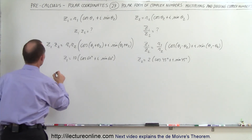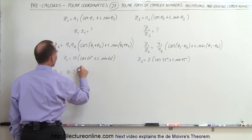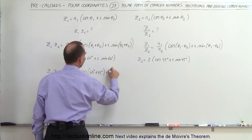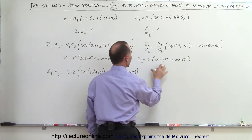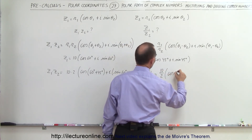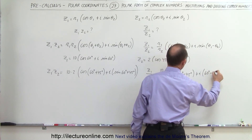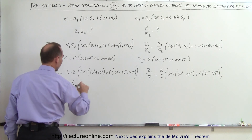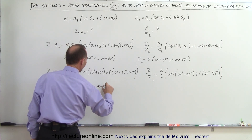Let's multiply them together. Z1 times Z2 is equal to the product of the two magnitudes, that would be 10 times 2, times the cosine of 60 degrees plus 45 degrees, plus i times the sine of 60 degrees plus 45 degrees. Simplifying, this is equal to 20 times the cosine of 105 degrees plus i times the sine of 105 degrees.